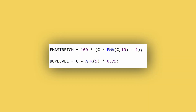The exact formula is shown on the screen. On the top line I calculate the stretch from the EMA as just described. On the bottom line I determine my buy level — I take the closing price and subtract three-quarters of the ATR from it. I use ATR extensively in my strategies and covered it in my recent videos.